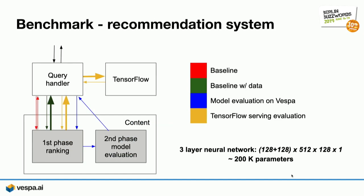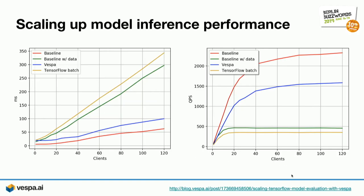We wanted to test this and set up a benchmark. We wanted to test the hypothesis that sending data around is not a smart thing to do. We set up a test emulating a blog recommendation system, where we have a user representation with a vector and a document representation with another vector. We set up a first phase as a dot product between them — a typical recommendation system. Then we have a second phase which is a neural network, evaluated either on the content node or on an external TensorFlow model server. Additionally, there's a green baseline-with-data condition that does the first phase but sends back the data as if going to an external server without actually doing anything with it, just to set a baseline. The model itself has about 200,000 parameters — a fairly reasonably sized model.